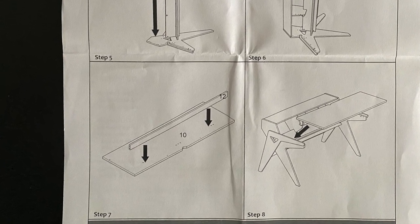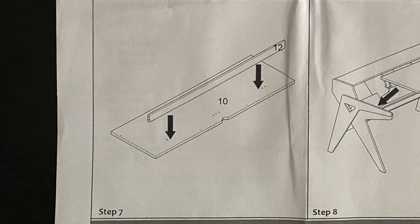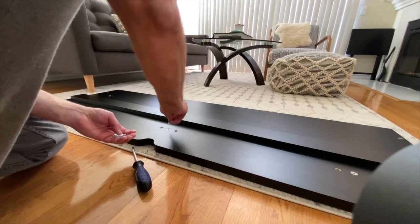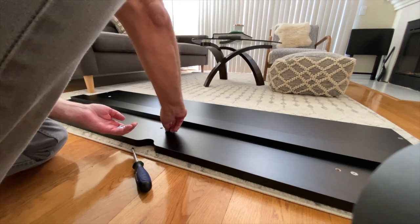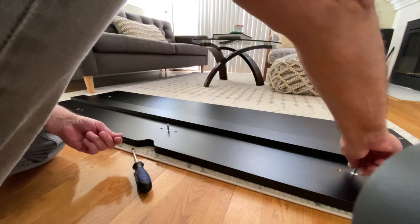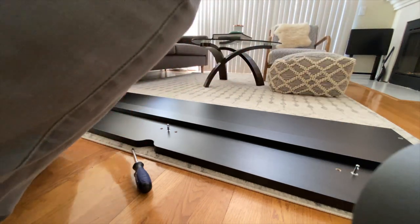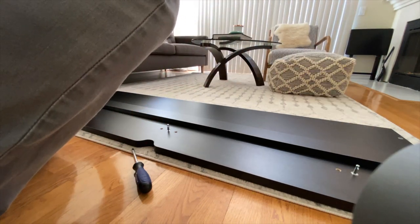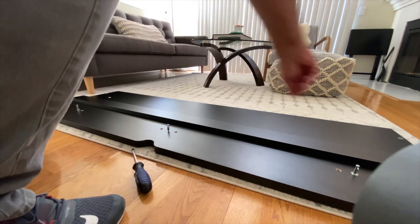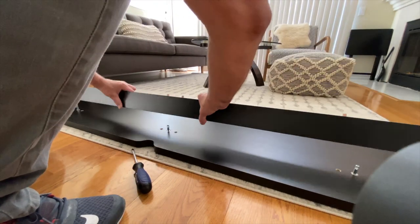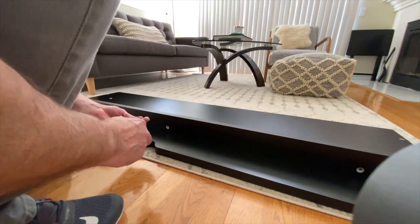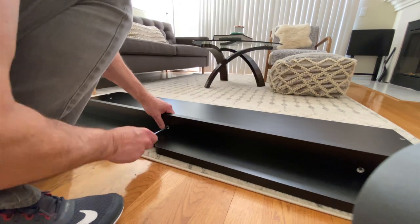Now in step seven, you have to attach stringer number 12, which is like a reinforcement for the desktop, which is number 10. Which I thought was nice, paying attention to detail. They actually put a reinforcement stringer across the bottom of the desktop, which is actually pretty thick, being half an inch thick, and it's pretty heavy.